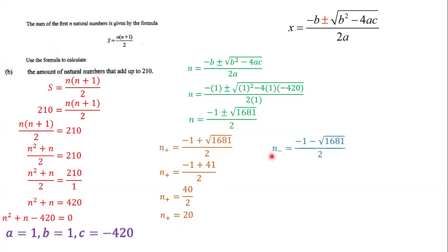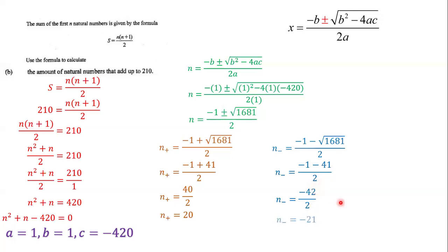Next we find n negative by using the minus sign. The square root of 1681 is 41, so we have −1 − 41 = −42, and −42 divided by 2 gives −21. So n negative is equal to −21.